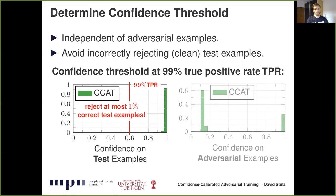It remains to determine the confidence threshold. We want a threshold independent of adversarial examples that rejects as few clean test examples as possible, since rejecting too many clean examples is unacceptable in applications. We fix the confidence threshold at 99% true positive rate, where true positives are correctly classified clean test examples — meaning we reject at most 1% of incorrectly classified clean test examples.